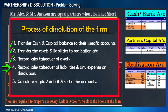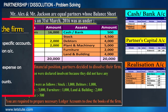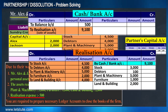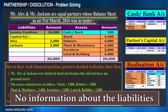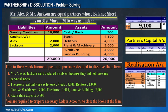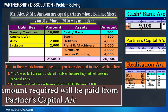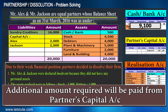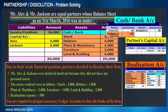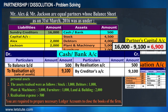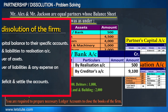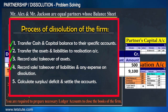We have now reached Step 4 — recording payment of liabilities and expenses on dissolution. Let's record the dissolution expense. There is no information about the payment of creditors directly, so creditors will be paid from the cash available. If additional amounts are needed, they will be paid from the partners' capital accounts. From the cash available, we pay off the creditors, and any remaining amount will be paid from the partners' capital accounts.